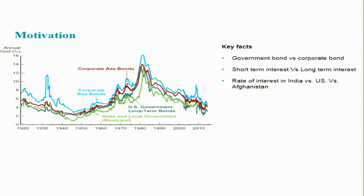Looking at this figure, on the y-axis we denote annual yield, which means the rate of interest, and on the x-axis is the time period. The yield to maturity — the rate of interest on different types of debt instruments — is shown here, including corporate double-A and triple-A bonds, corporate BAA bonds, US government long-term bonds, state and local government bonds, and municipal bonds.